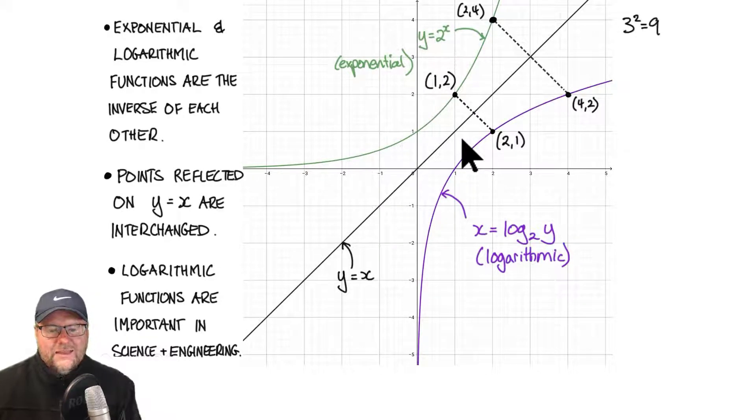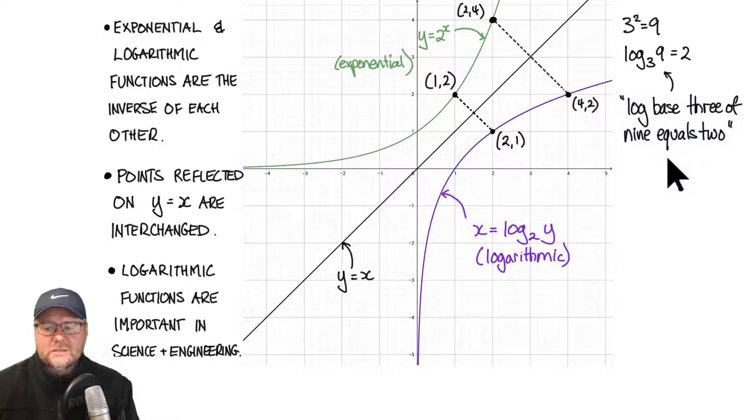Let's have a look at the connection in the equations between exponentials and logarithms. Here's an exponential: 3 squared equals 9. The logarithm of that is log base 3 of 9 equals 2. We would say log base 3 of 9 equals 2. Once again you can see there's a 3, a 9 and a 2 - a 3, a 9 and a 2 also in my exponential.